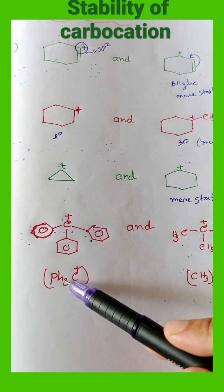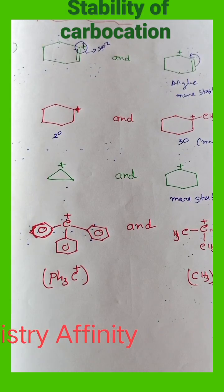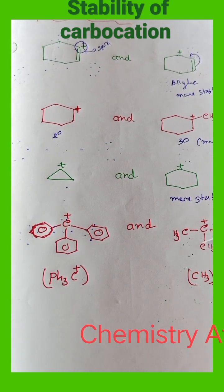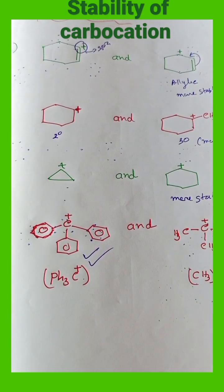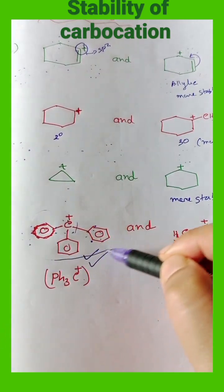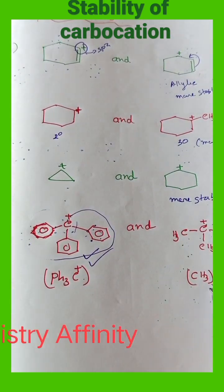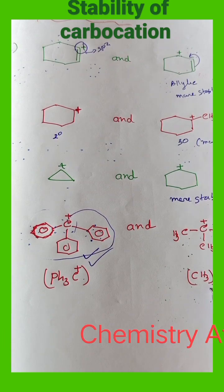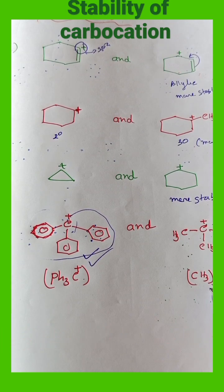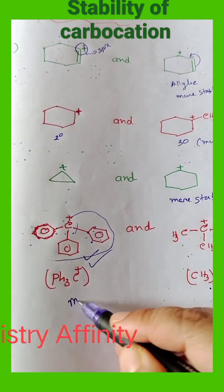Last but not the least, it is Ph3C+ and (CH3)3C+. So this Ph3C+ carbocation will be more stable because it undergoes resonance. Here it has only +I effect. We know resonance is more dominating than inductive effect. So it will be more stable.